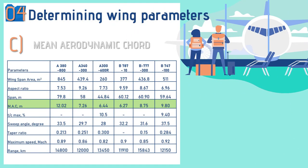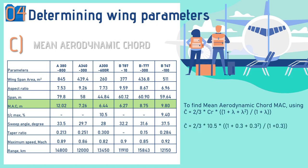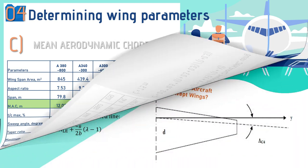The mean aerodynamic chord (MAC) is calculated using: C̄ = (2/3) × C_r × [(1 + λ + λ²) / (1 + λ)]. Substituting the values gives a mean aerodynamic chord of 7.5 meters, which falls within the reference range for large passenger aircraft.